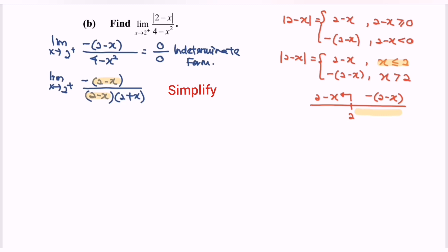Kindly rewrite the situation. Limit when x approaches 2 from the right. After we simplify the situation, we will have negative 1 over 2 plus x. Then, if we substitute the value of 2, we will obtain negative 1 over 4.